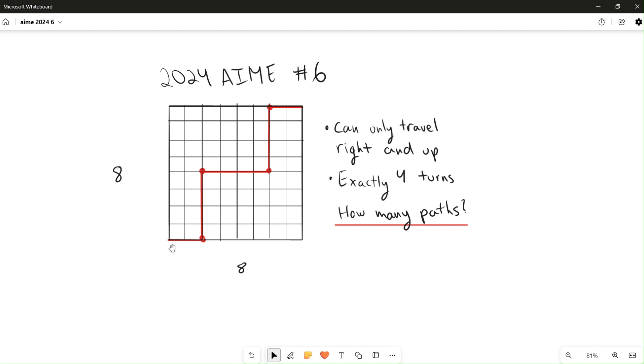So we have this little puzzle: an eight by eight grid with a path shown in red from the bottom left to the top right corner, where you can only turn right or go up, and it has to have exactly four turns, which are the red dots in the diagram. The question is, how many such paths are there?